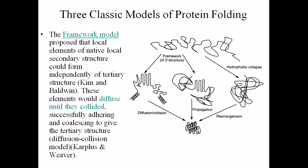We have three types of models of protein folding. The first model is called the framework model, the second is the nucleation model, and the third is the hydrophobic collapse. We are going to look at these three different types of models and finally determine what is the actual model to describe protein folding.